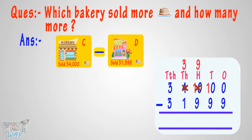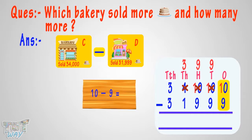Give 1 to 0 at the 10's place, making it 9. Then give 1 to 0 at 1's place. Now we have 10 at 1's place. Subtract 9 from 10, we get 1. Write 1 at 1's place in the difference.